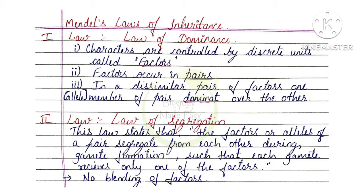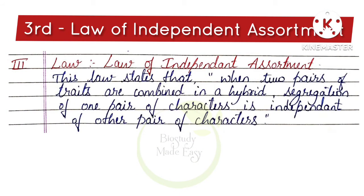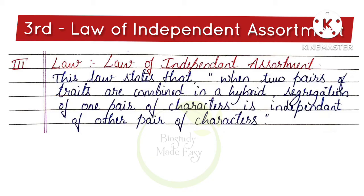The Third Law is the Law of Independent Assortment. This law states that when two pairs of traits are combined in a hybrid — two pairs of characters — the inheritance of one pair is independent of the other.